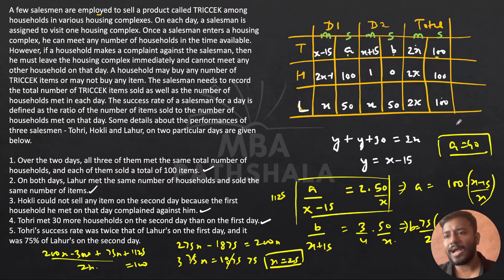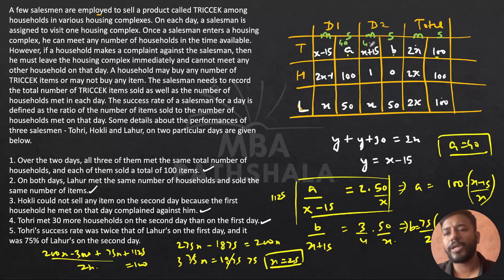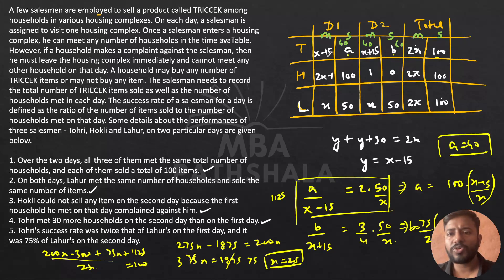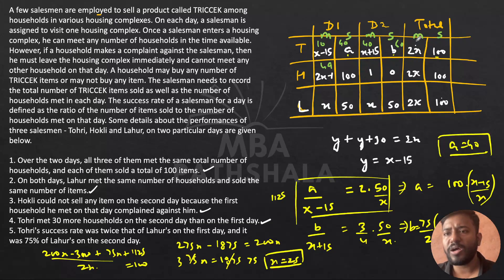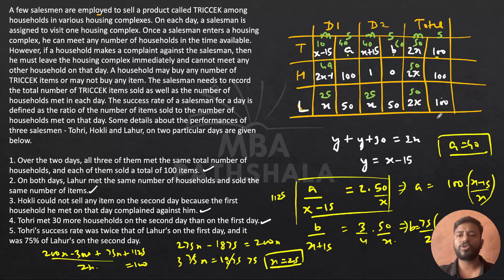So the complete table values are: x = 25, a = 40, b = 60. Tori: Day 1 met 10, sold 40; Day 2 met 40, sold 60. Hockley: Day 1 met 49, sold 100; Day 2 met 1, sold 0. Lahur: Day 1 met 25, sold 50; Day 2 met 25, sold 50. All variables are now determined and we can proceed to answer the questions.